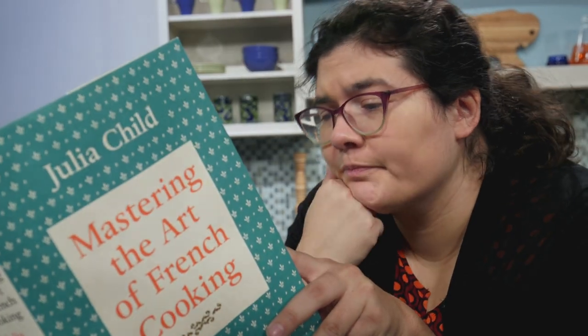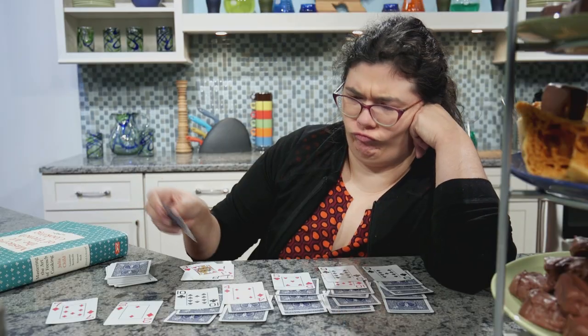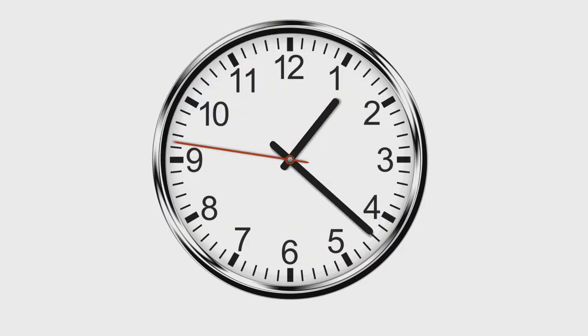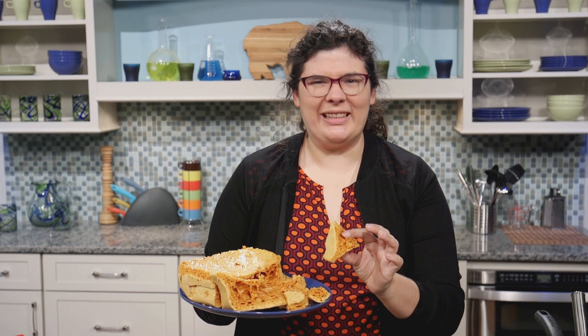And now we wait. Let the sponge candy cool off and don't touch it for about two hours. After that, take the candy out of the dish and smash it into smaller pieces. Some people like to dip it in chocolate, but I think it tastes great on its own.